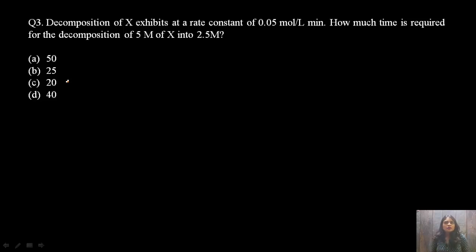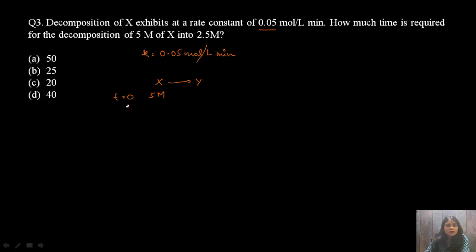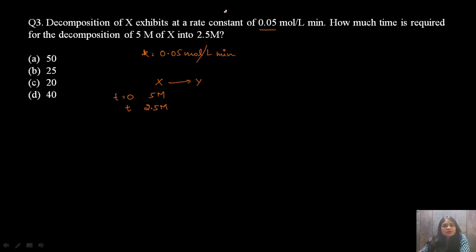Next question: decomposition of X has a rate constant K = 0.05 mol/L/min. Suppose X → Y; at t = 0, concentration is 5 M and we need to find the time for it to become 2.5 M. The order is not directly given, but note that order can be found from the units of K. From rate law: K = rate/[A]^n, and the unit of rate is mol/L/time.